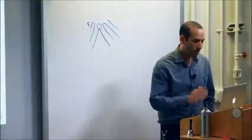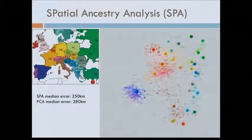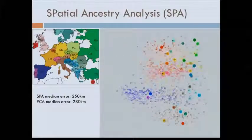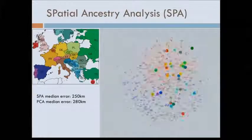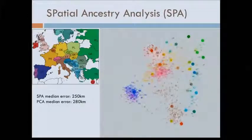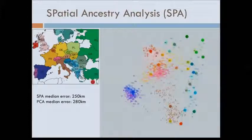The algorithm converges to a map of Europe. Qualitatively it's very similar to PCA, but quantitatively our method SPA achieves a median error of about 250 km compared to 280 km for PCA — about 10% improvement. The distance is measured to the capital or largest city of each person's reported country of origin.